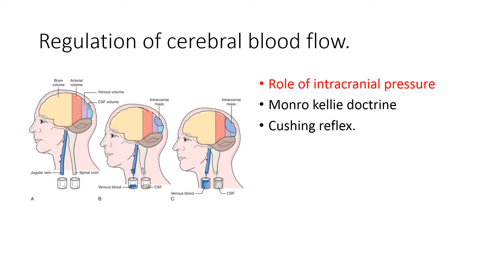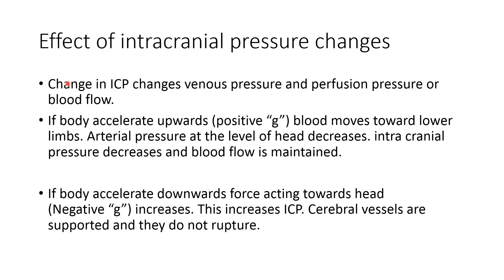The increased systemic blood pressure is sensed by baroreceptors, which trigger the baroreceptor reflex, producing bradycardia through decreased sympathetic and increased parasympathetic output to the pacemaker tissue. Therefore, whenever intracranial injury occurs, it produces hypertension associated with bradycardia — this reflex is known as the Cushing reflex.